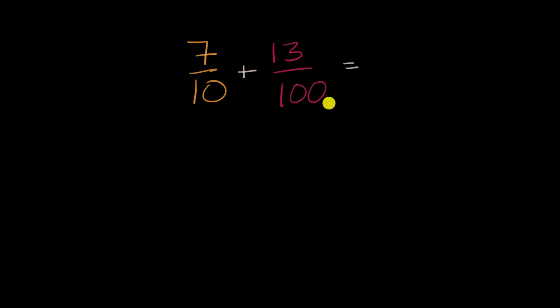All right, so this might be a little bit intimidating at first because we're adding tenths here, seven-tenths, and we're adding hundredths here, 13 hundredths. How do I add a certain number of tenths to a certain number of hundredths?